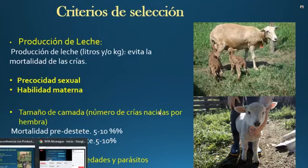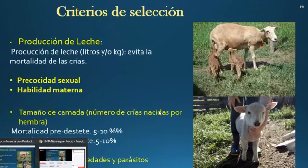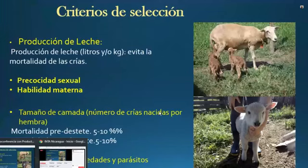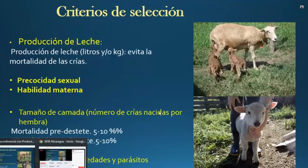Si la hembra da buena cantidad de leche, vamos a evitar la mortalidad en las crías. La precocidad sexual también es importante: no deben ser muy precoces ni tampoco muy lentas. También se evalúa el tamaño de la camada; el productor siempre busca la hembra que le dé gemelos. Es importante conocer de esa hembra cuántos partos ha tenido, cuánto ha sido la mortalidad antes del destete y después del destete, ya que esto depende de la producción de leche, del manejo y de la habilidad materna. Debe ser resistente a enfermedades y parásitos.